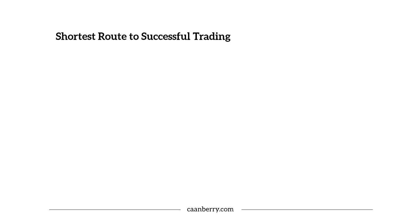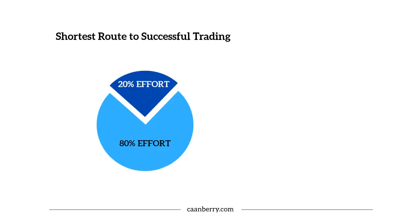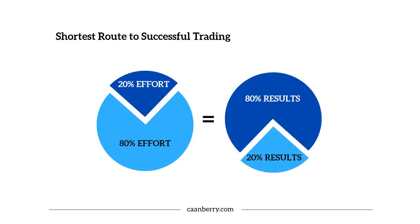So the shortest route to successful trading — the answer is to be efficient. A lot of people are probably aware of Pareto's principle, something I often think about and relate heavily to exchange trading, which basically says 20% of your effort usually yields 80% of your results. Alternatively, people usually spend 80% of their time and effort which actually yields only 20% of their results.